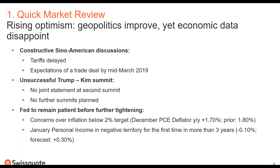The discussions between China and the US administration are going pretty well. We're waiting for more information regarding a possible new deal on tariffs, but that deal has been delayed. We're in mid-March 2019, expecting more information in the coming days. There's still a lot of optimism, so the S&P went up in the last weeks. The Trump-Kim Jong-un summit was unsuccessful - there was no joint statement at the second summit and no further summits planned.